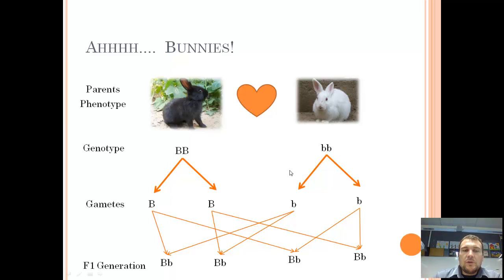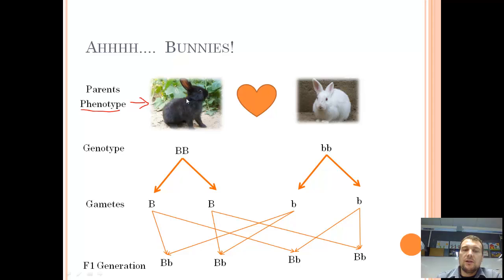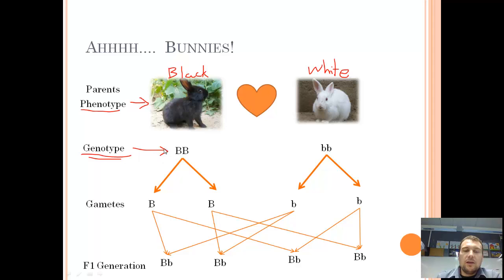Now we're going to use bunnies to demonstrate the next thing. Some more terminology: phenotype basically refers to their physical traits — how their traits are expressed physically. So in this case we have a black-furred bunny and over here we've got a white-furred bunny. The genotype is the alleles that the individual is carrying.